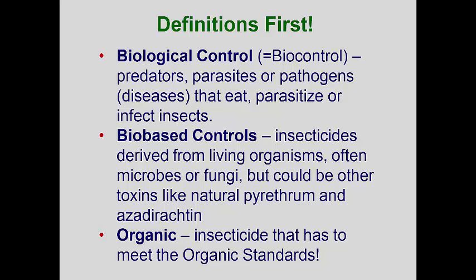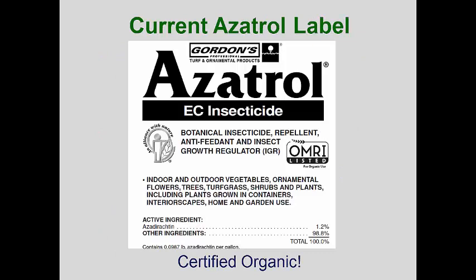I'll also throw in the term organic, as folks often use this term when referring to bio-based insecticides. Organic merely means that a product has passed the National Organic Review Board and has been judged to meet organic standards. Some bio-based toxins are not considered to be organic because they are either too toxic or contain synthetic spreader stickers. For example, the azadirachtin formulation Azetrol uses naturally occurring products and is considered a low-toxicity molecule, so it has received the OMRI organic certification emblem. Other azadirachtin formulations that use synthetic spreader stickers are not deemed organic.